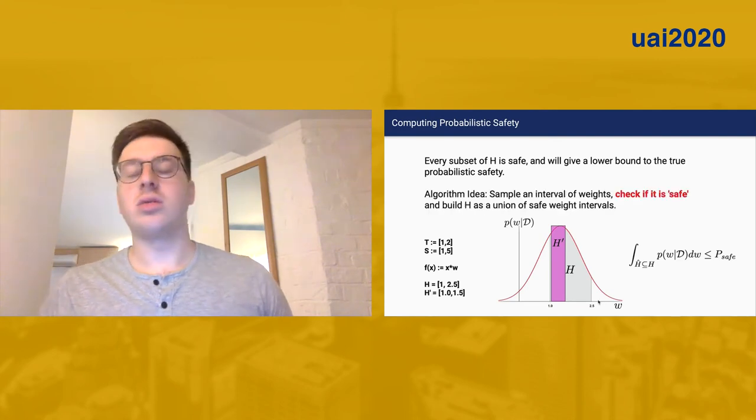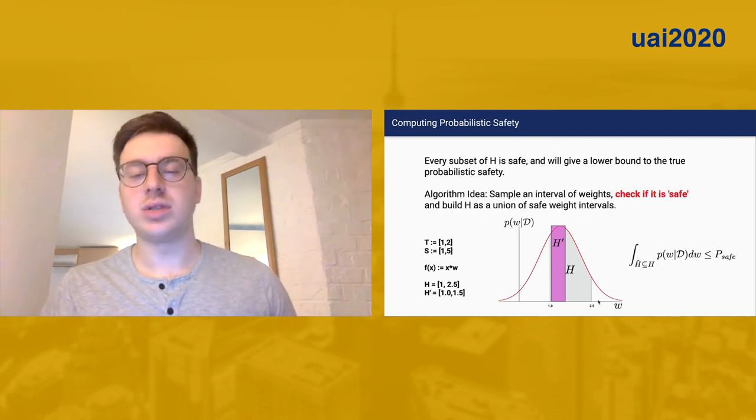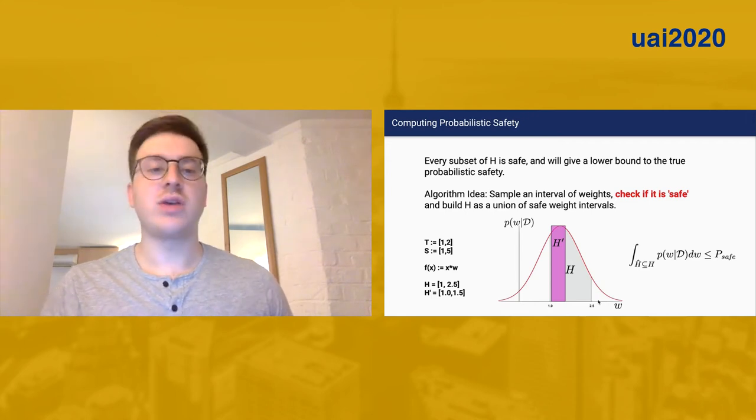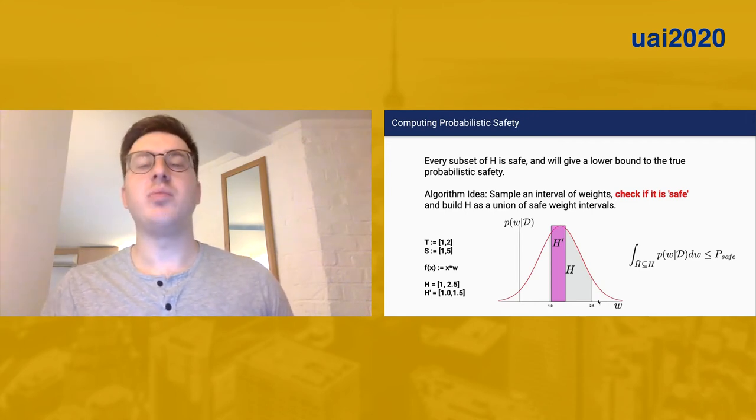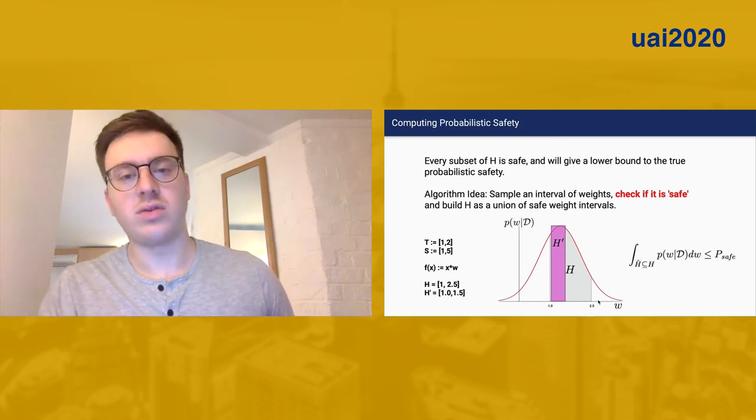An algorithm idea is to simply sample an interval of weights to check if that interval of weights is safe, and then to build up a final safe weight interval as a union of these weight intervals.